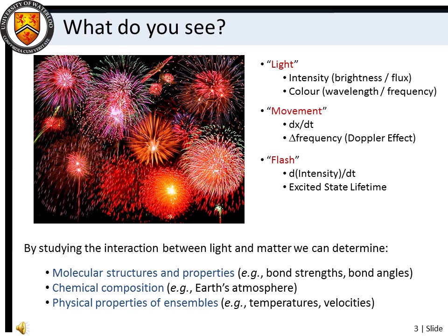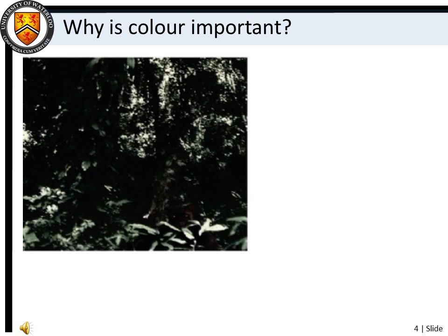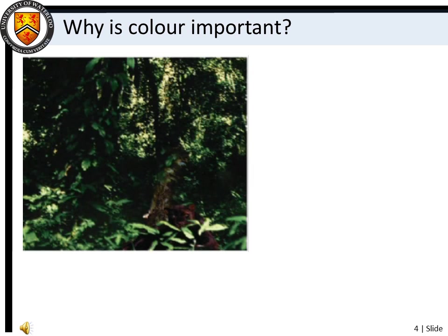The goal of Chemistry 209 is to teach you how spectroscopy may be used to better understand the world around us. For example, why is it useful for us to see in color? Shown here is a jungle scape as we would see it in grayscale. Can you see the predator in this picture? The location of the panther is much more obvious when we view the scene in color. Different materials have different colors, and these differences are fundamentally related to chemical composition.